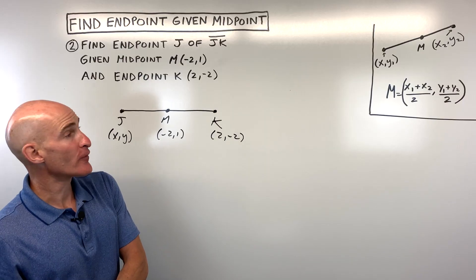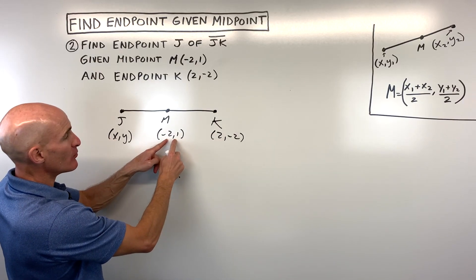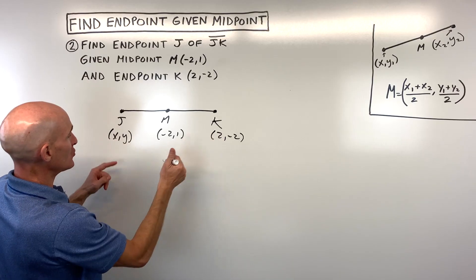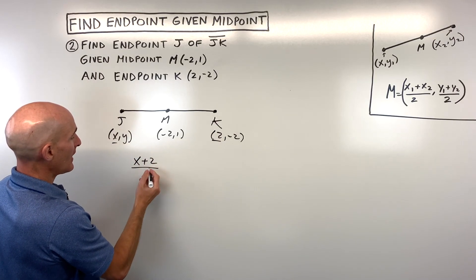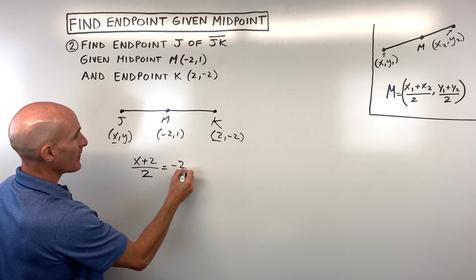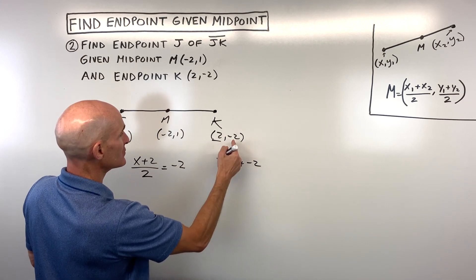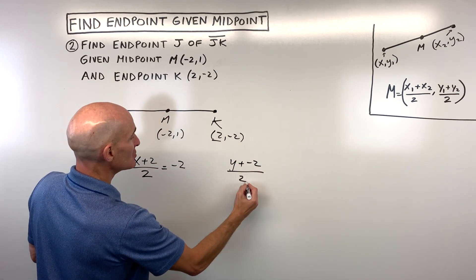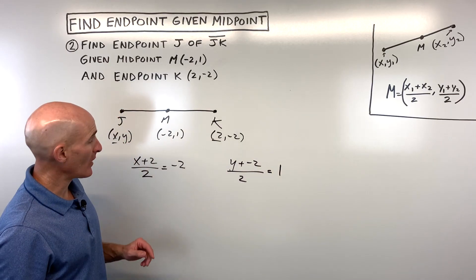So let's do the formal method first. What I would do is I would average the two endpoints to get the midpoint. So I'm going to say X plus two, so add the two X coordinates together, and divide by two, and that equals the X coordinate of the midpoint. And let's do the same thing for the Y. We're going to say Y plus negative two divided by two equals the Y coordinate of the midpoint.